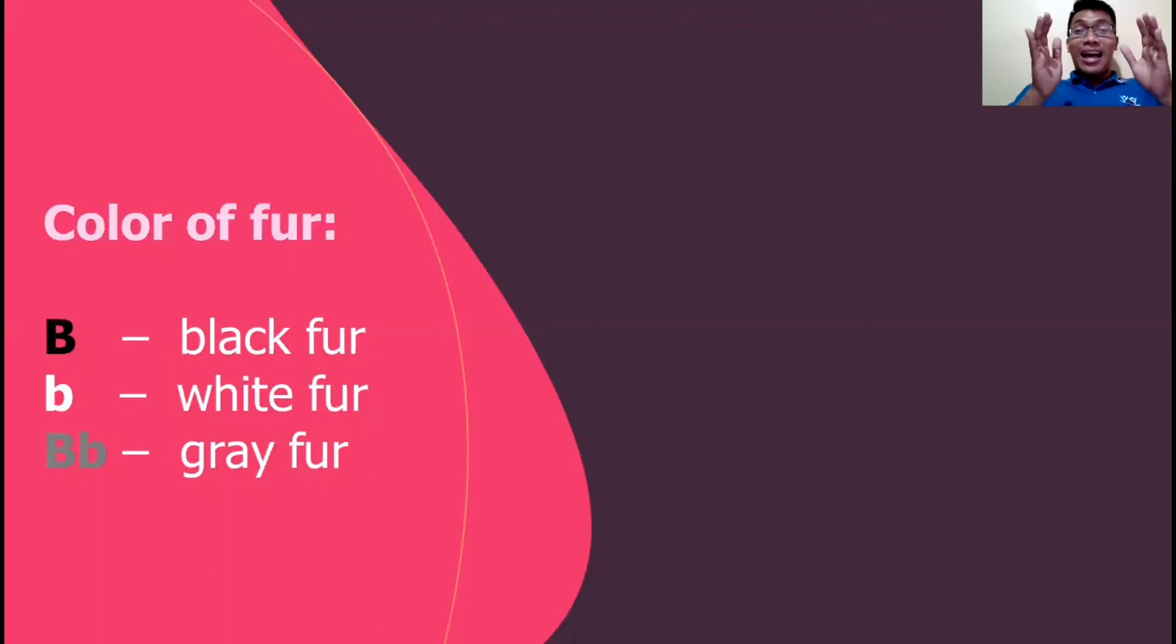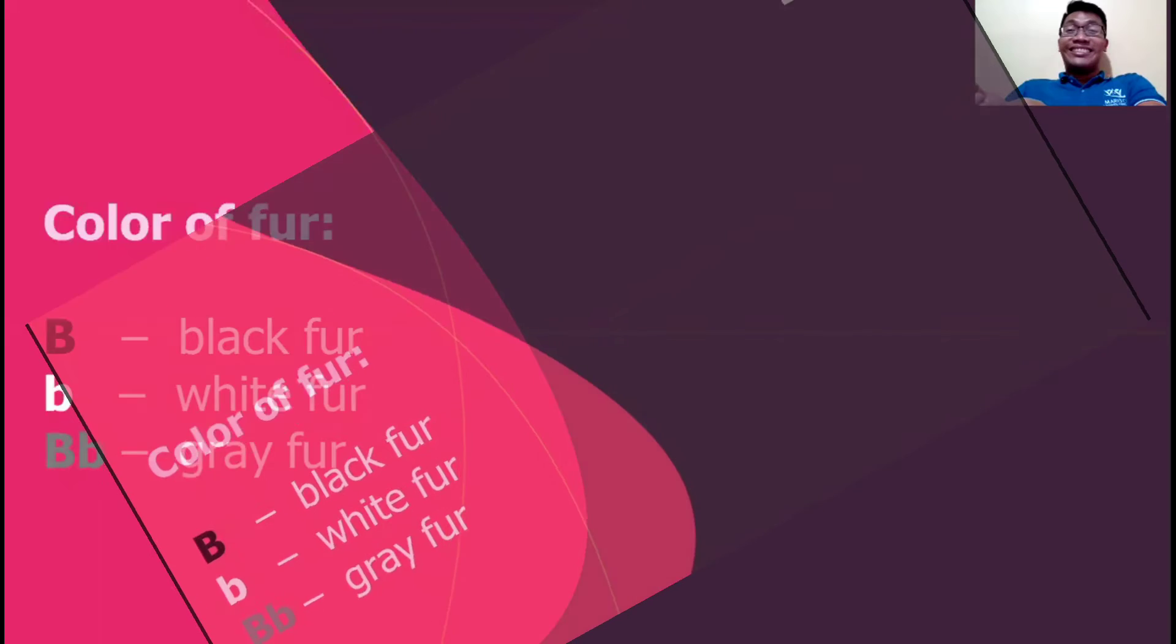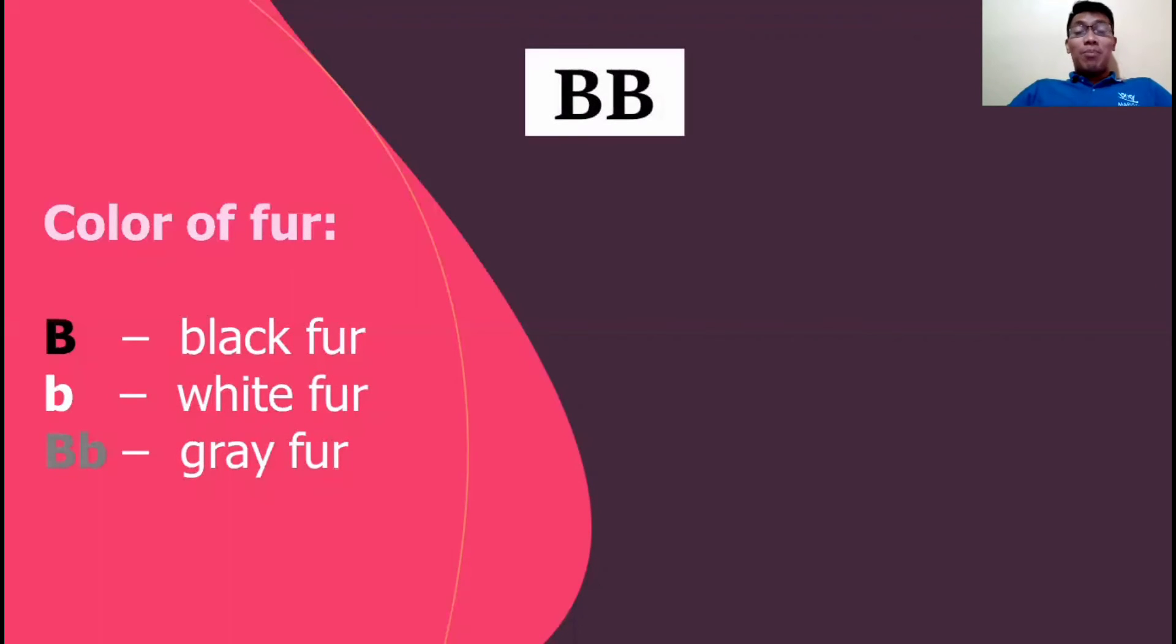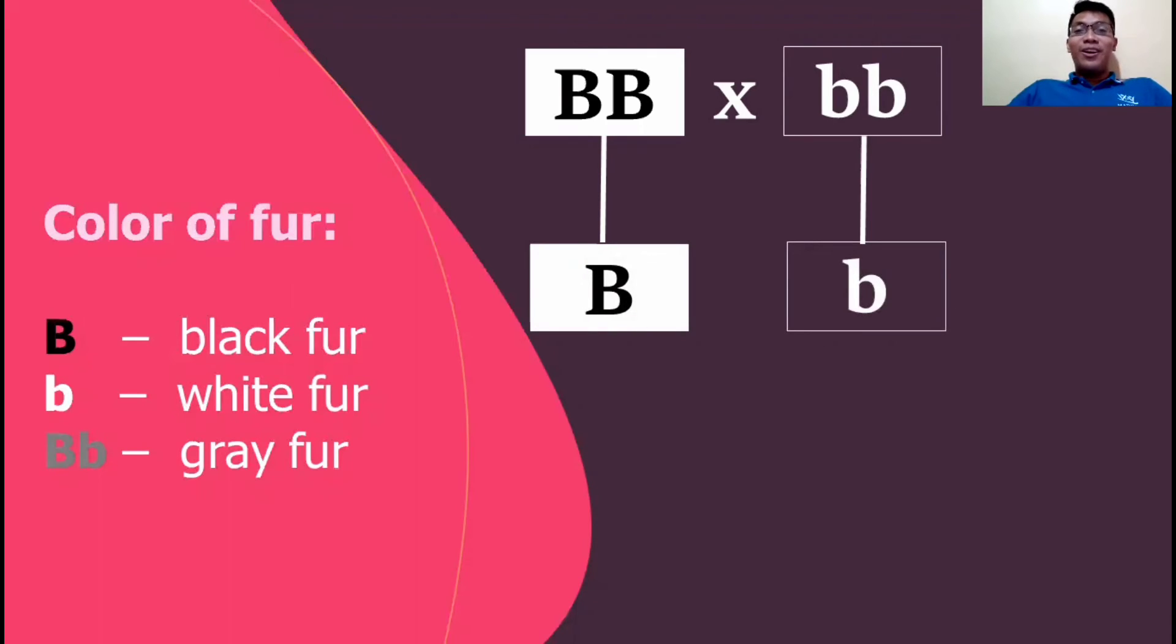Like for example, black is the dominant trait, therefore I use capital B for black, then small b for the recessive trait. Let's proceed. So the black rabbit is represented as two capital B, then the white one is represented by two small b. So again, law of segregation. Supposedly we should have two capital B and two small b, but for a much simpler analysis we will just represent it as one.